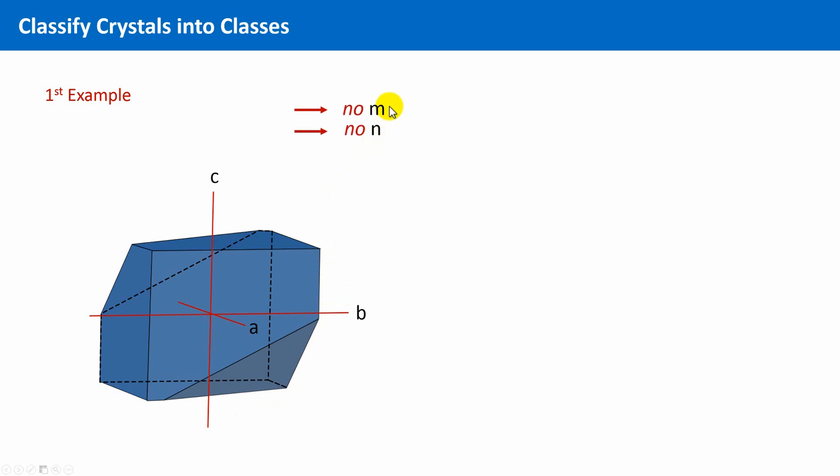Okay, there is obviously no mirror plane. There is also no rotational symmetry. But there is a center of inversion. This is the only symmetry element in this case. And a center of inversion is denoted in crystallography as one bar. And this is also the crystal class of this schematically drawn crystal.